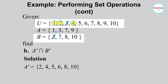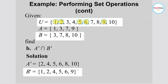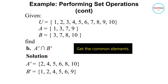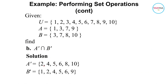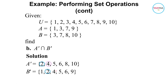For B complement, we go through the universal set and exclude elements in B: 3, 7, 8, and 10 are in B, so B complement is the set containing 1, 2, 4, 5, 6, and 9. The intersection is common to both sets, so the common elements between A complement and B complement are 2, 4, 5, and 6.